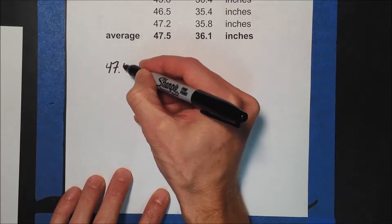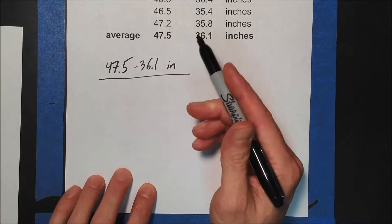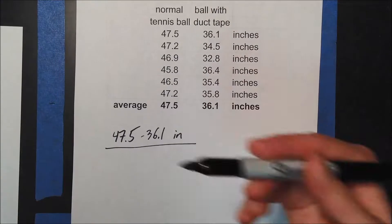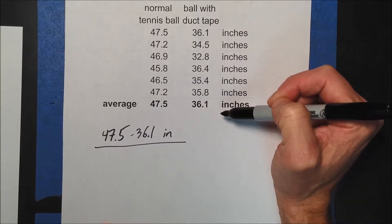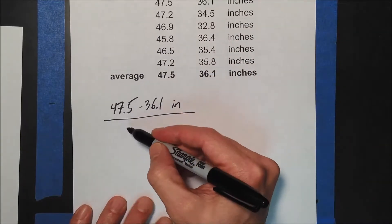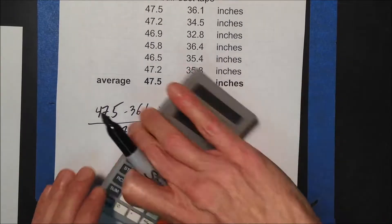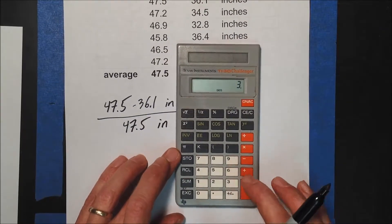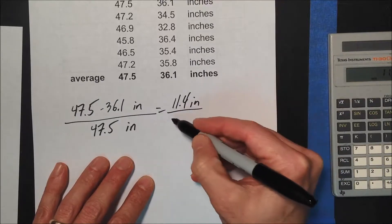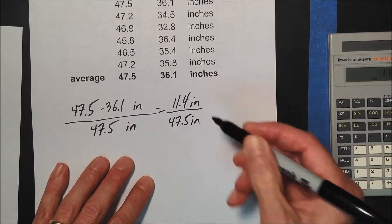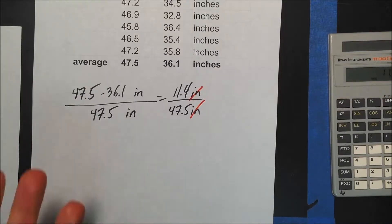It is going to be the difference: 47.5 inches minus 36.1 inches. And then you divide it by — in this case, I want to compare it to the normal tennis ball, because that's what we're used to. We're really testing how much the duct tape changes the bounce compared to the normal ball. So I'll compare it to the normal tennis ball at 47.5 inches. Notice you always want to check the units first, but inches over inches will cancel, so there are not going to be any units — you will get a percent when we're done.